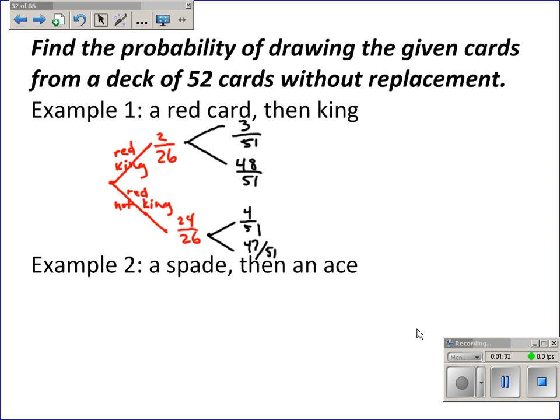Now, the only branches that I care about are when I drew a red card and then a king. Well, sorry, where both cards were kings, or where the first one was not a king and the second one was a king. Okay, because it fits the situation. So, I will multiply 2 over 26 times 3 over 51, and I get 0.0045. Or, where it's a red card that's not a king times the second card being a king, which is 0.0684.